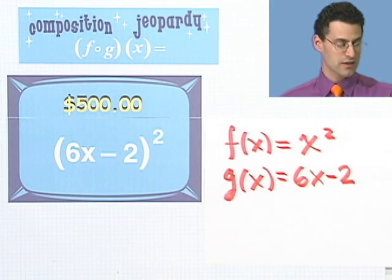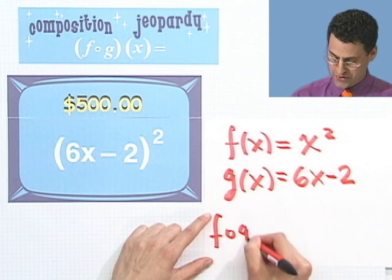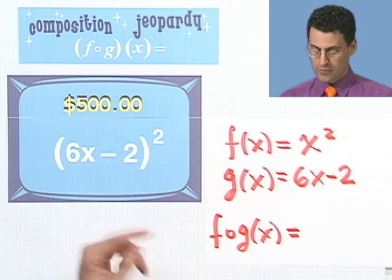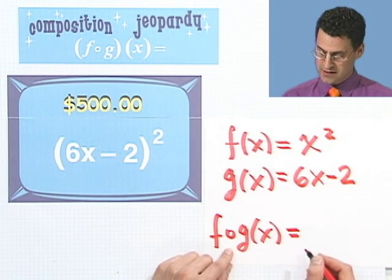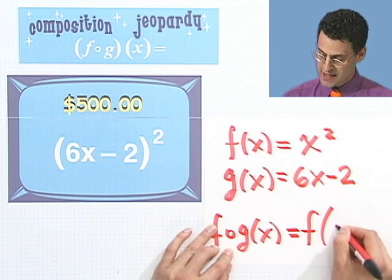Let's check our answer and see if it's really the case that f composed with g of x equals this answer. What do I do? Well, I first take g of x, and so that's this, and I plug that in.